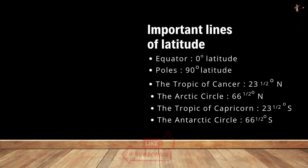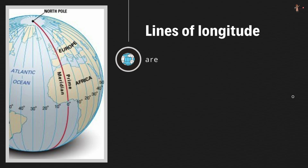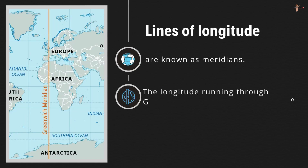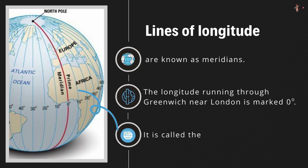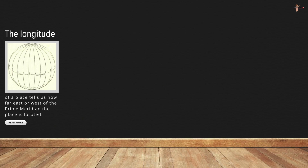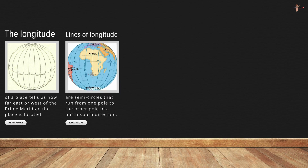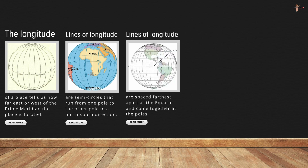Next are lines of longitude — they are known as meridians. The longitude running through Greenwich, near London, is marked zero degrees and is called the prime meridian. The longitude of a place tells us how far east or west of the prime meridian the place is located. Meridians are semicircles that run from one pole to the other in the north-to-south or south-to-north direction. They are spaced farthest apart at the equator and come together at the poles.